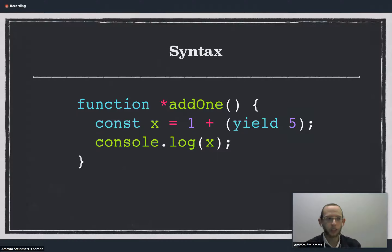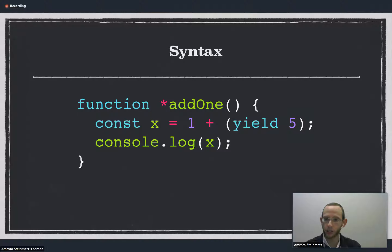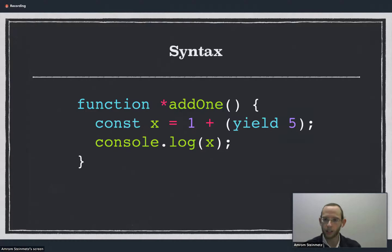So let's take a look at some syntax. This is a simple generator function and as you can see there are two things that are different from ordinary functions. The first thing is that star at the function name, which tells us that this is a generator function, and the second thing is that yield keyword on the second line, which I'll be going over what exactly that does.